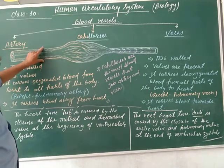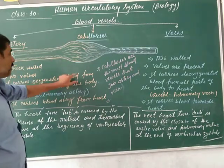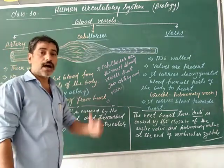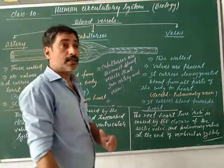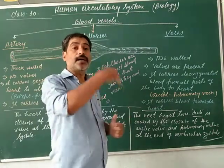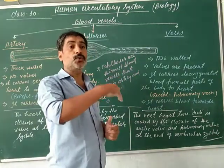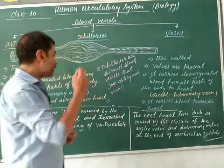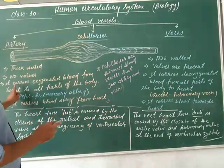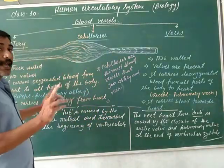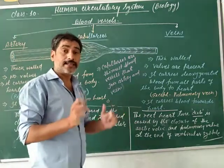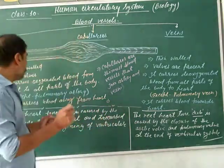Artery carries oxygenated blood from the heart to all parts of the body. Artery carries the blood away from the heart. All arteries carry oxygenated blood from the heart to all parts of the body, except the pulmonary artery.